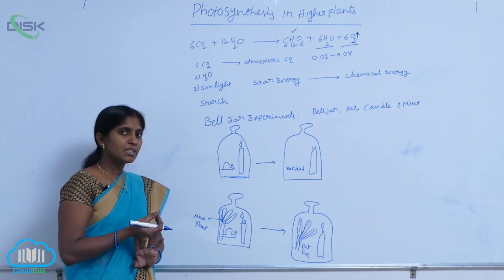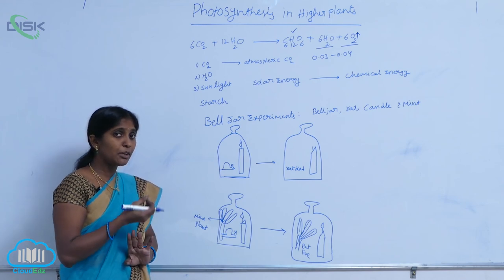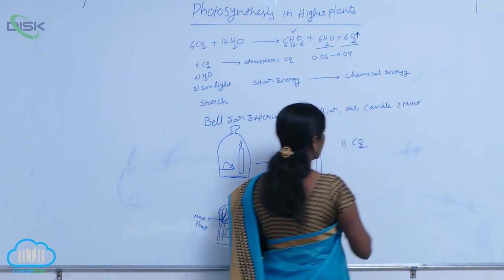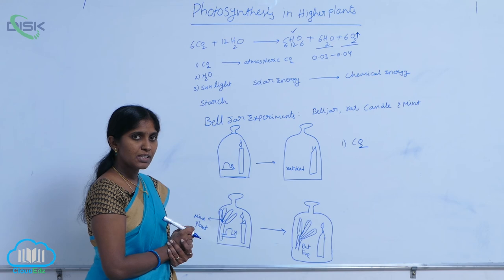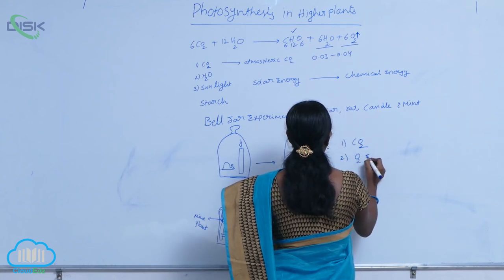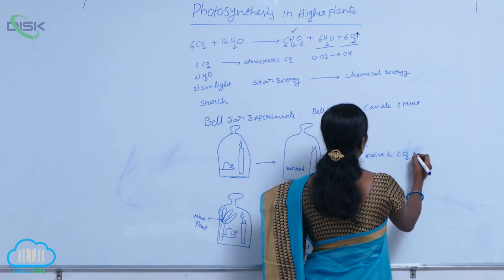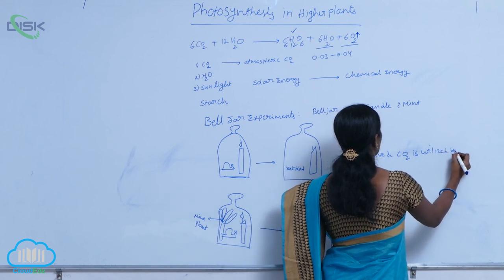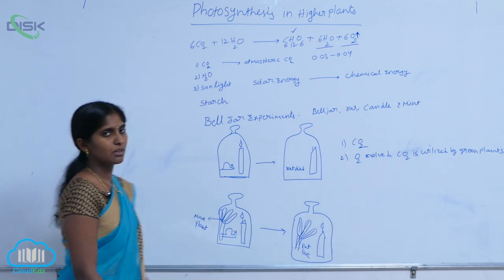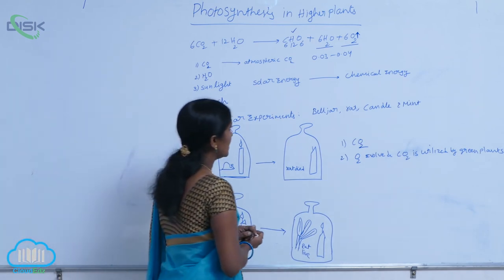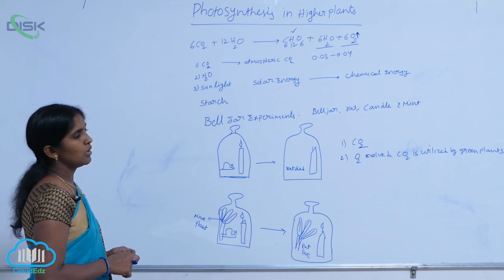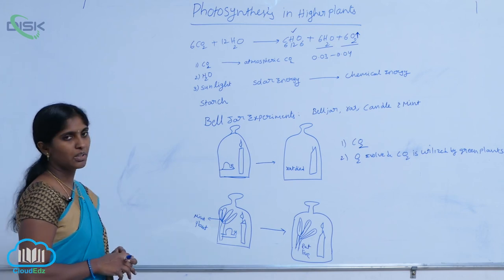The plant also releases oxygen and purifies the air. Finally, Priestley concluded that carbon dioxide is released from animals through breathing and from candle burning, and oxygen is also evolved. Carbon dioxide is absorbed by green plants kept under the bell jar. This experiment clearly shows that CO2 is consumed and oxygen is evolved during photosynthesis.